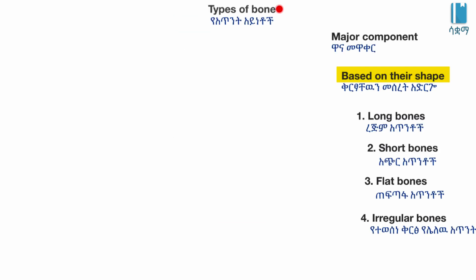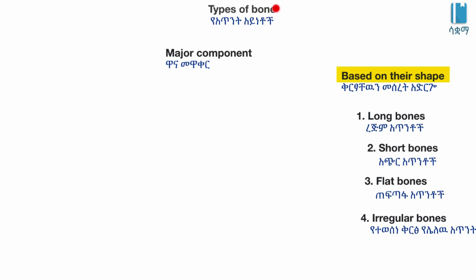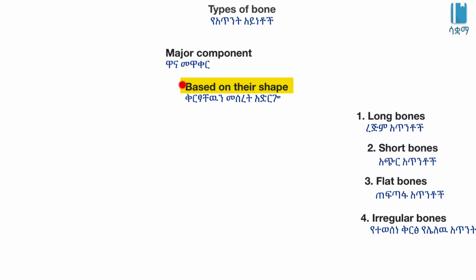Types of bone. Our bones are the major component of our skeletal system. Based on their shape, they are divided or categorized into two to four types.